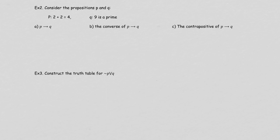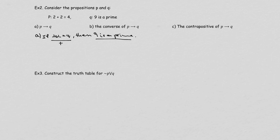Let's look at example 2, where we look at the 'if-then' statement a bit more. Statement P is '2 plus 2 is 4,' and Q is '9 is a prime.' For part A, P then Q means 'if 2 plus 2 is 4, then 9 is a prime.' P is true and Q is false — this is the only time a conditional is false, so P then Q is false.